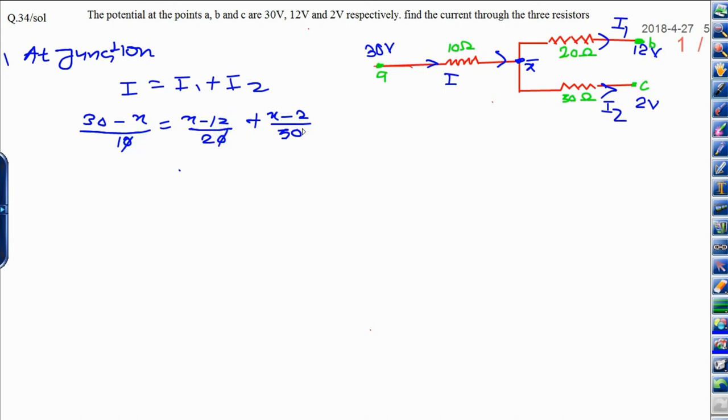Try to solve then, 10 will cancel out. And that will be 30 minus X is equal to, take 6 as LCM, we will get 3X minus 36 plus 2X minus 4. And you can multiply by 6, that is 180 minus 6X is equal to 5X minus 40.